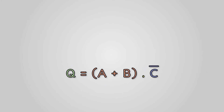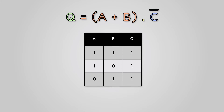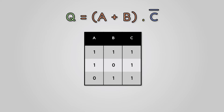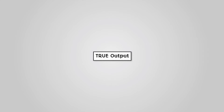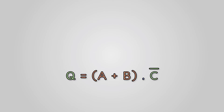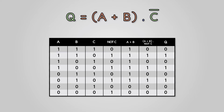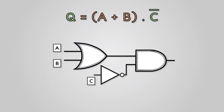Now we have seen how we can use boolean algebra to represent some circuits, we can build up truth tables to show all the inputs and all the possible outputs for any circuit. We can then use this to work out which combinations of inputs will give us a true output. The way to do this is to start small and build up your truth table column by column. In your exam, you might need to complete a truth table for a given boolean expression or draw the circuit diagram for a boolean expression and then plot the truth table.